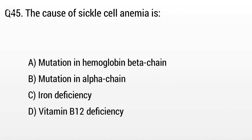Question 45. The cause of sickle cell anemia is: The right answer is Option A: Mutation in hemoglobin beta chain.